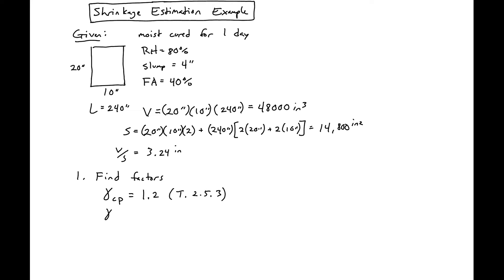Next, for 80% relative humidity we'll have a factor of 0.6, from table 2.5.4.